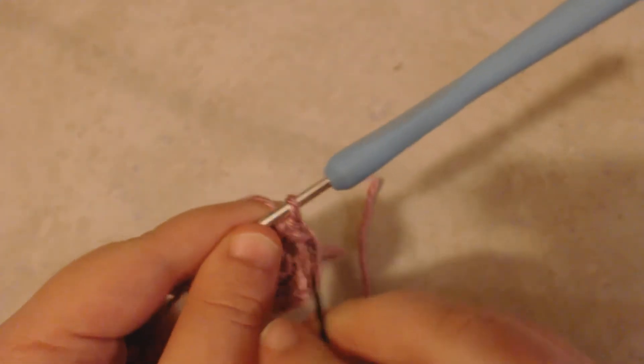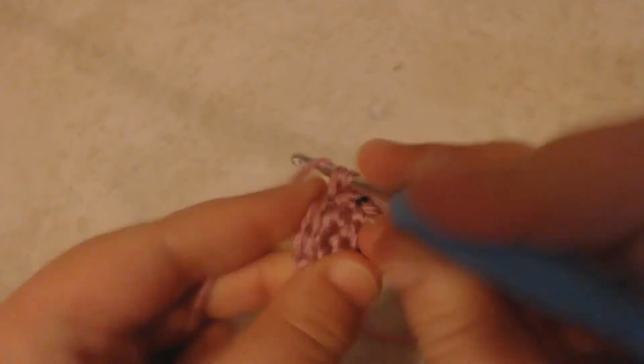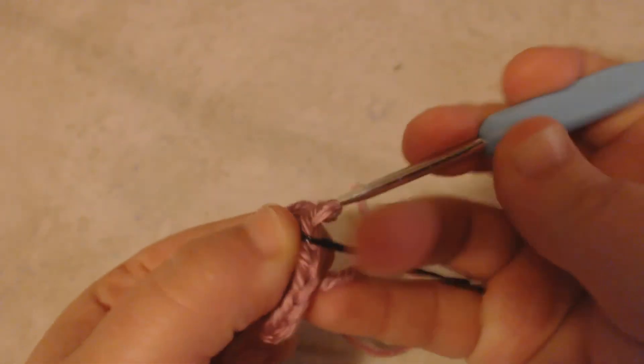So I've done the first stitch. Now I'm going to single crochet two times into the second stitch. And I'm going to continue to increase every second stitch all the way around the row.